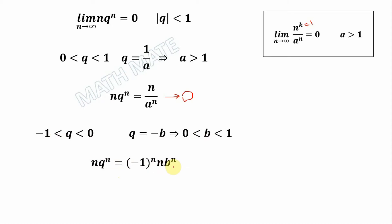by n times b to the power of n. For this multiplication we can apply this result because b is between 0 and 1 as before, and so this multiplication goes to 0 because we have proved it in the previous case. And when it's multiplied by negative 1 or positive 1, it also goes to 0.